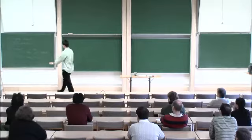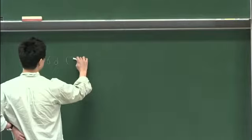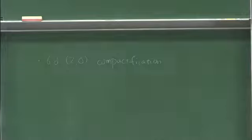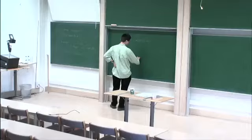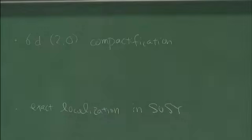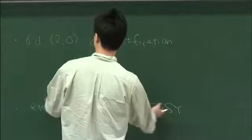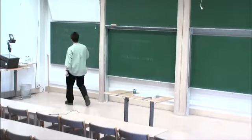There are two basic stories. This story fits into a slightly larger category. The first is the compactification of the (2,0) theory. We are going to hear more about these six-dimensional theories later this week. There are also exact localization computations — localization in supersymmetric theories. Sarah is going to talk about such topics in the afternoon today.